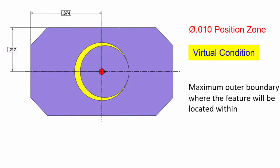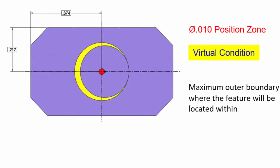Now, with the pin at its MMC, you can see that it cannot go outside the extents of this yellow boundary. Now when the pin gets smaller, it's allowed more position outside of that, but it still is maintained within the virtual condition boundary. It still can't exceed that imaginary outer boundary that you're establishing.